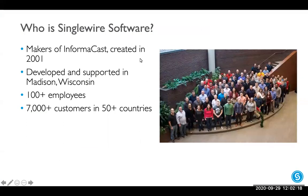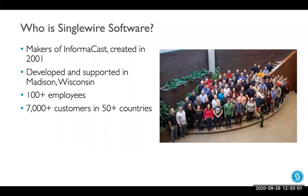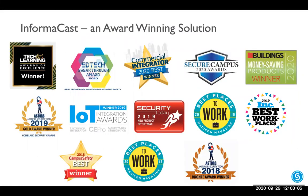Thank you, Kevin. Just a little bit of background on who Single Wire is. We're based in Madison, Wisconsin. We have about 110 employees and roughly 7,000 customers in more than 50 countries. We made InformaCast starting back in 2001 — coming up on 20 years now — and really started out by sending to on-premises devices. It started out based on a request from the U.S. Department of Commerce because they had to comply with a homeland security mandate that came out after the 9/11 attacks. So we wrote the software for them to broadcast to all of their IP phones at once. That was the very first customer — still a customer today. We've garnered quite a few awards in the last two to three years and we're very happy to be in such great company.